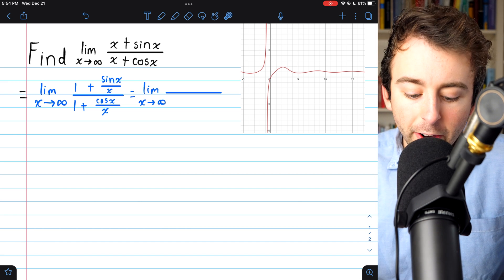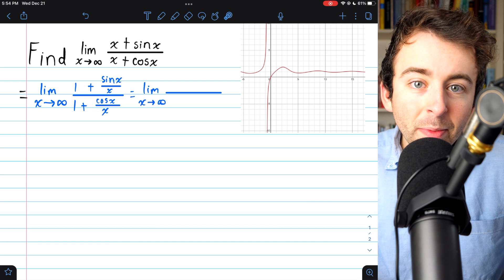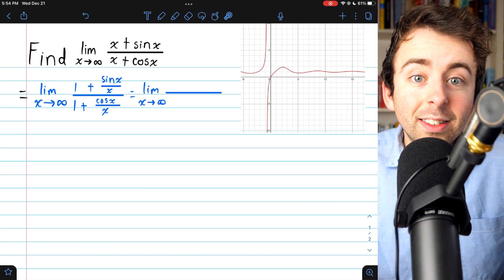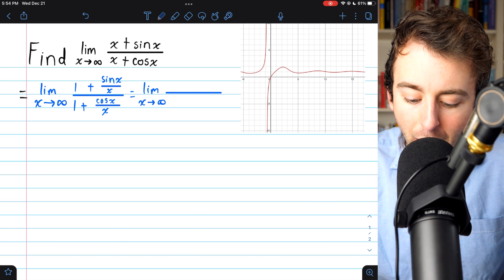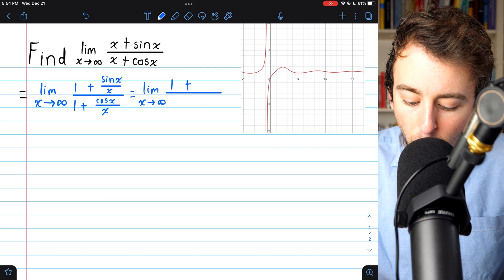So, this just goes to 0. If you haven't proven that before, it's a very easy squeeze theorem problem. So, in the numerator, we have 1 plus 0.